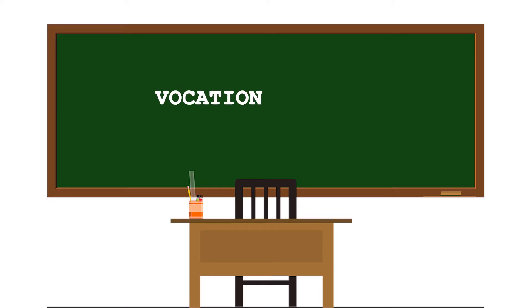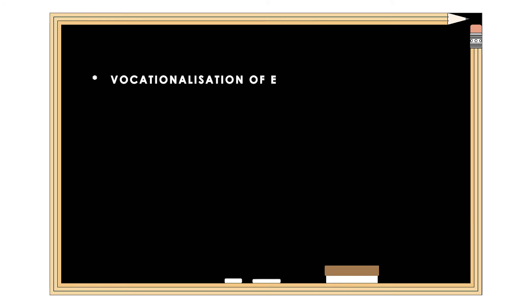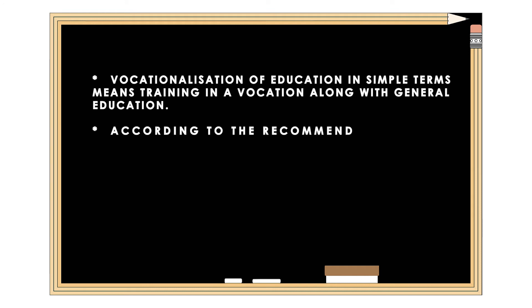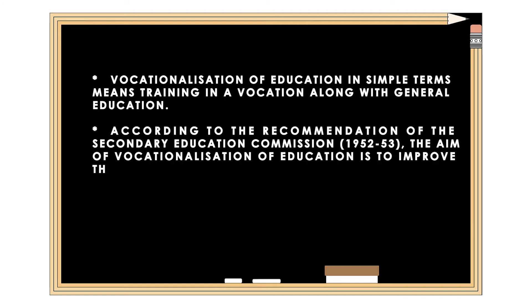Now let us understand what we mean by vocationalization of education. In simple terms, it means training in a vocation along with general education. According to the recommendations of the Secondary Education Commission 1952-53, the aim of vocationalization of education is to improve the vocational efficiency of students.